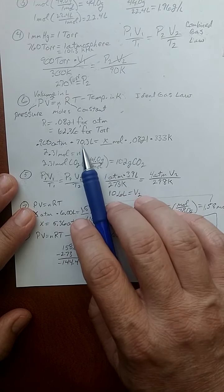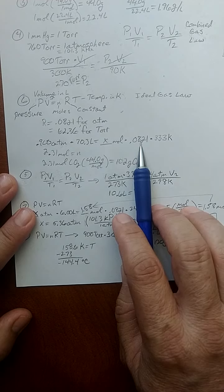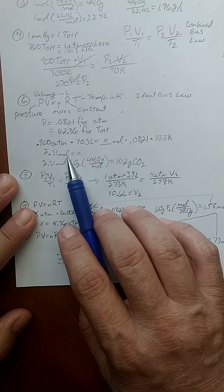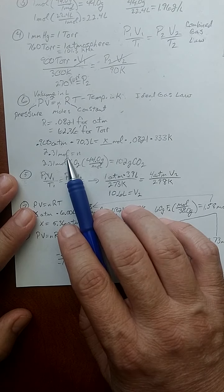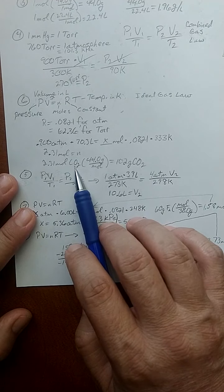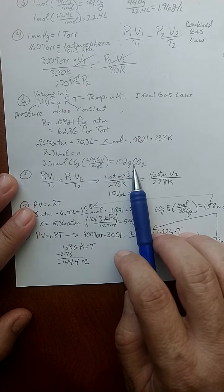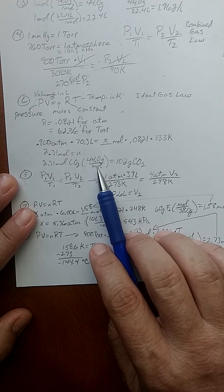So, 0.9 times 70.3 divided by 0.0821 divided by 333 is 2.31 moles. Of what? Of carbon dioxide. And I should know how to convert moles to grams using the molar mass.